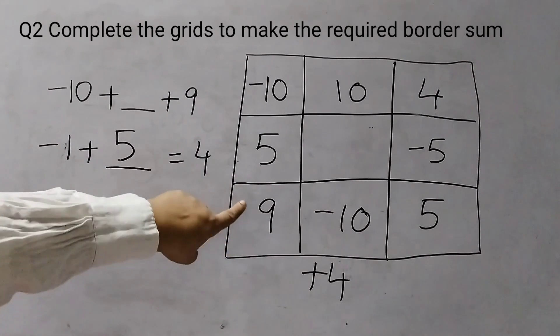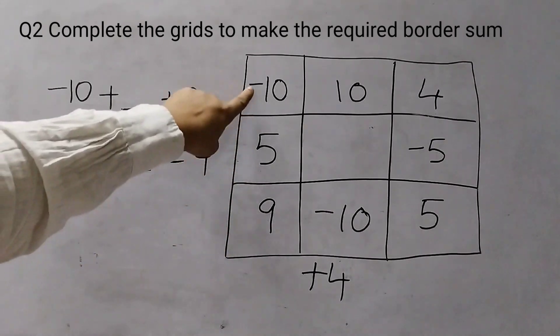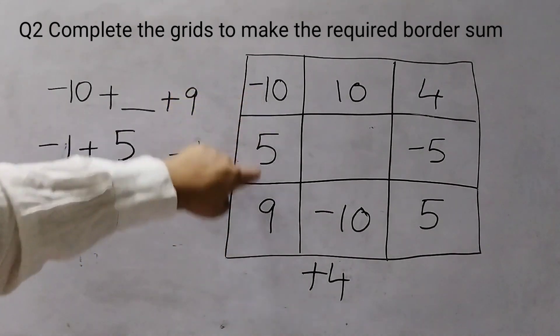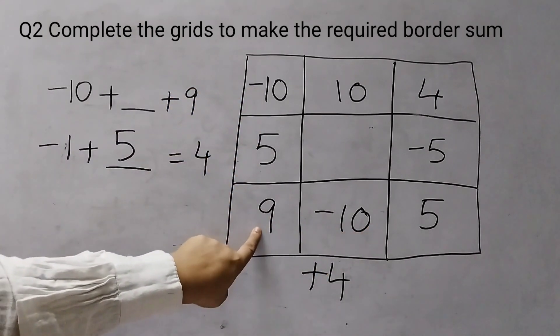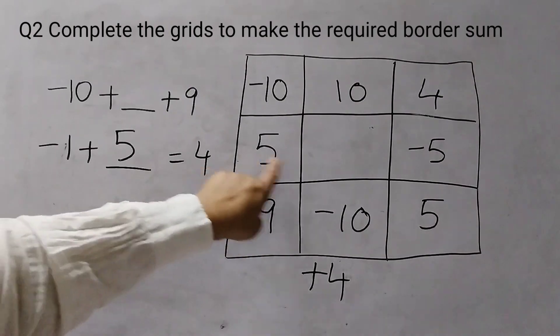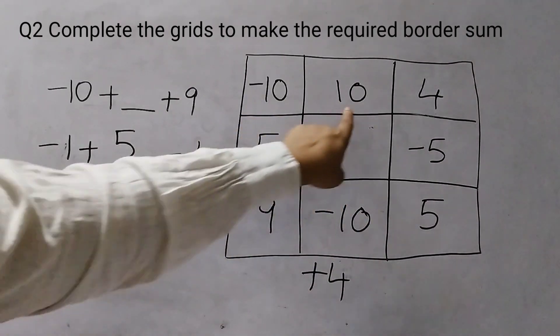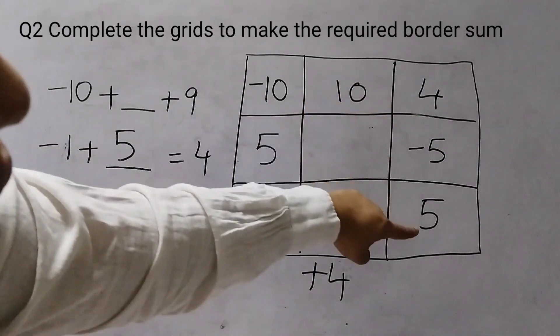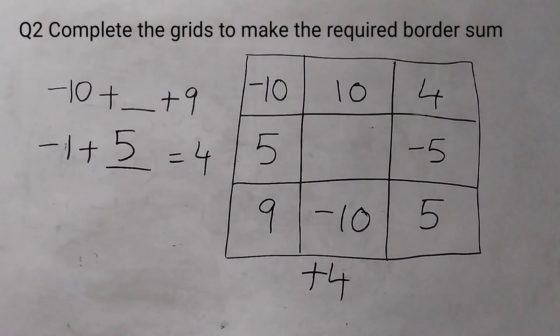So I will put a 5 here. You can add up and check: 9 plus 5 is 14, 14 plus minus 10 is 4. This one: 0 plus 4, and then 0 plus 4. We have solved the first grid.